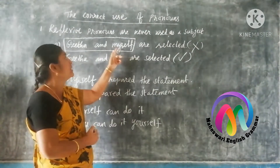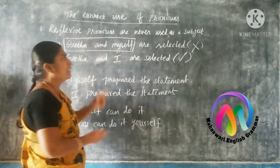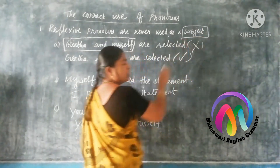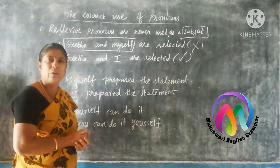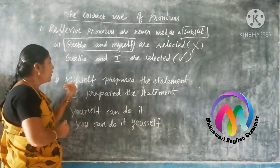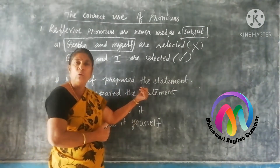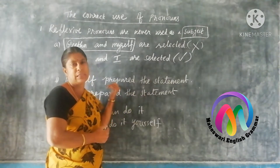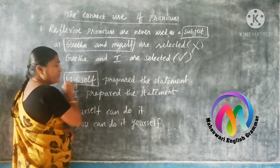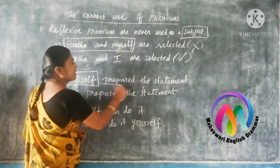We cannot use the reflective pronoun in the place of subject. See the second example: 'Myself prepared the statement.' Who prepared the statement? Myself. But reflective pronoun is never used in the place of subject. Here, 'myself' is in the subject position, 'prepared' is the verb, and 'the statement' is the object.